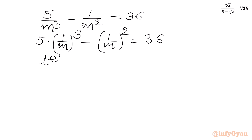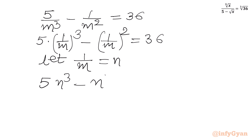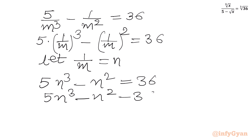Now we will consider a second substitution: let 1 over m equal to n. So our equation becomes 5n³ minus n² equal to 36, or 5n³ minus n² minus 36 equal to 0.